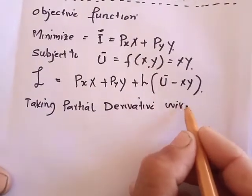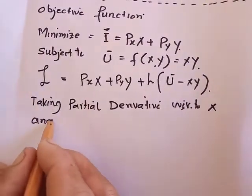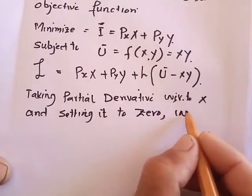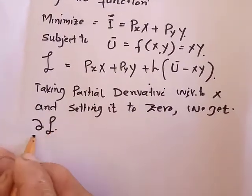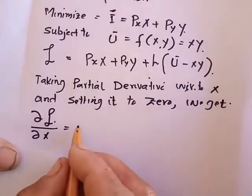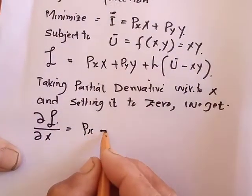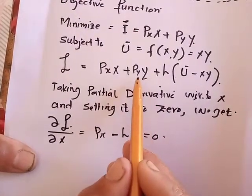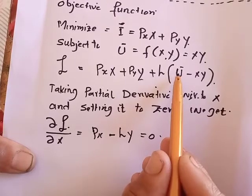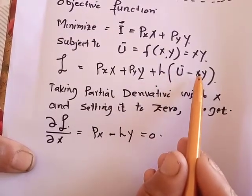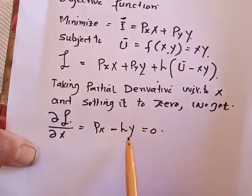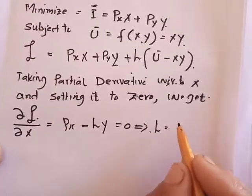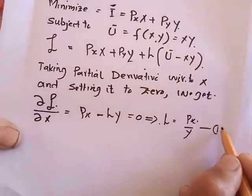So taking the partial derivative of the Lagrangian with respect to x and setting it to zero, we get: the derivative of the Lagrangian with respect to x — derivative of P_x·x equals P_x, so P_x minus lambda·y equals zero. The derivative of the utility term: since utility is constant, the derivative of u is zero, so lambda·(x·y) — taking partial derivative with respect to x gives lambda·y equals zero. Solving for lambda gives lambda equals P_x divided by y. This is equation number 1.